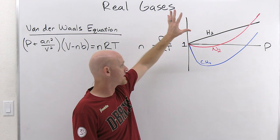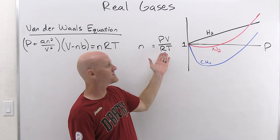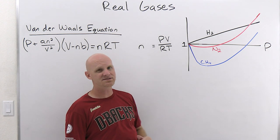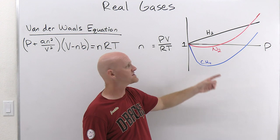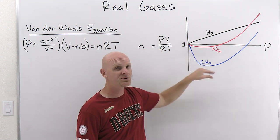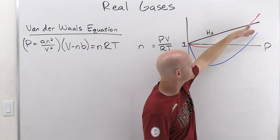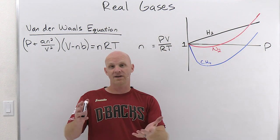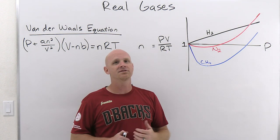You should realize that on a typical graph like this, where we graph this compressibility factor, when you're below the ideal gas horizontal line, it's attractive forces responsible. And when you're above, it is repulsive forces, or the fact that molecules take up volume that is responsible.